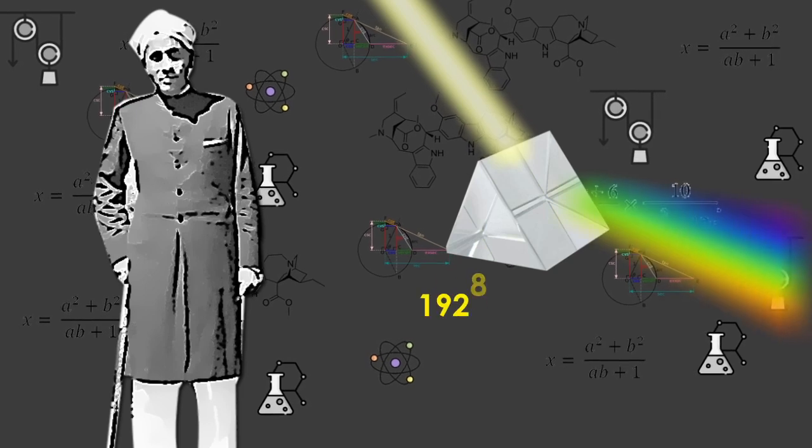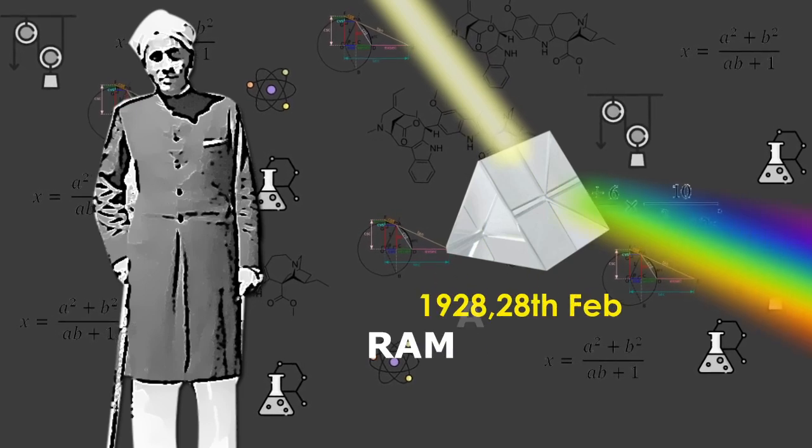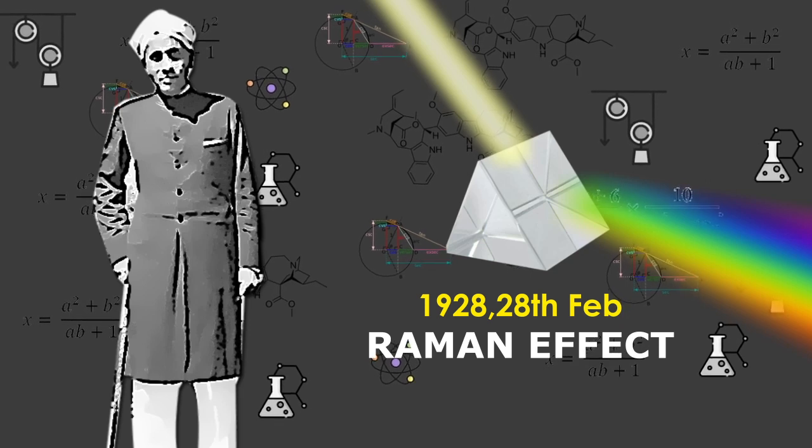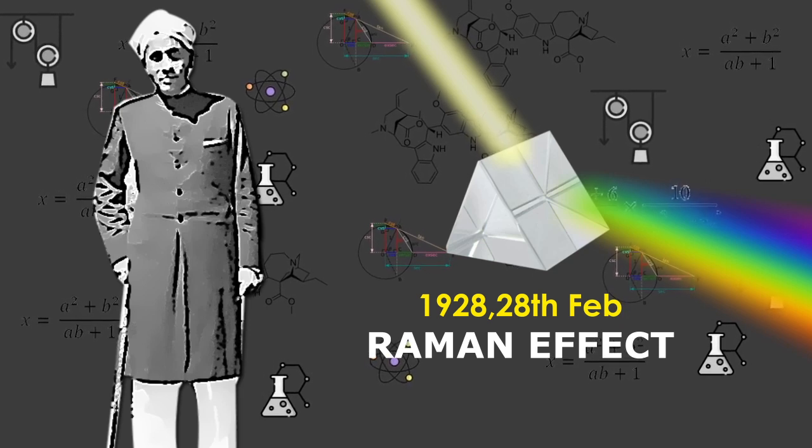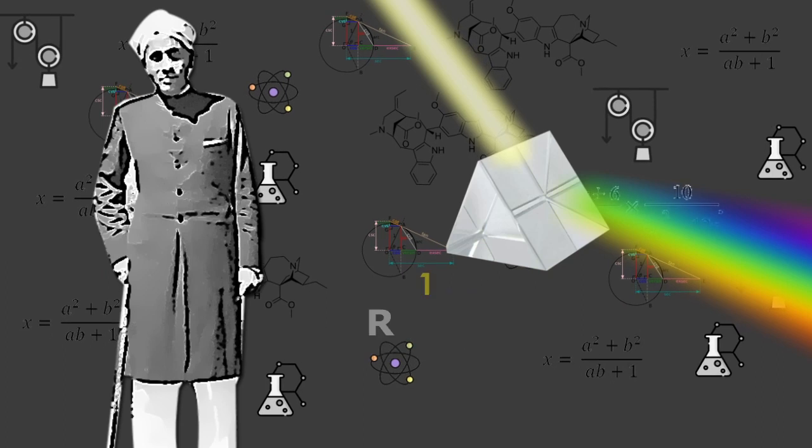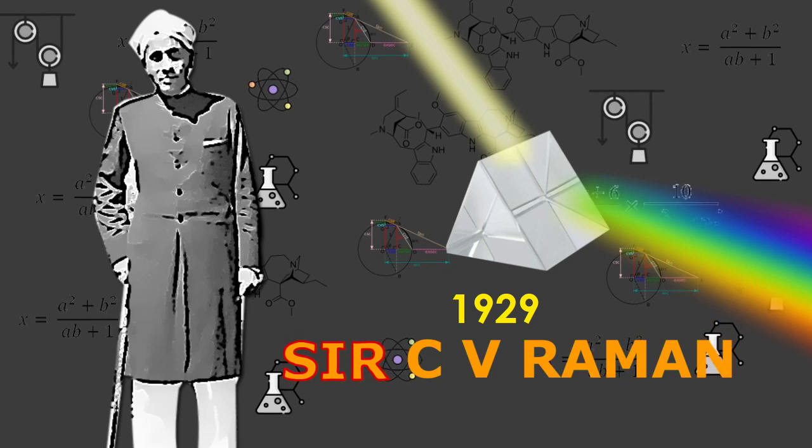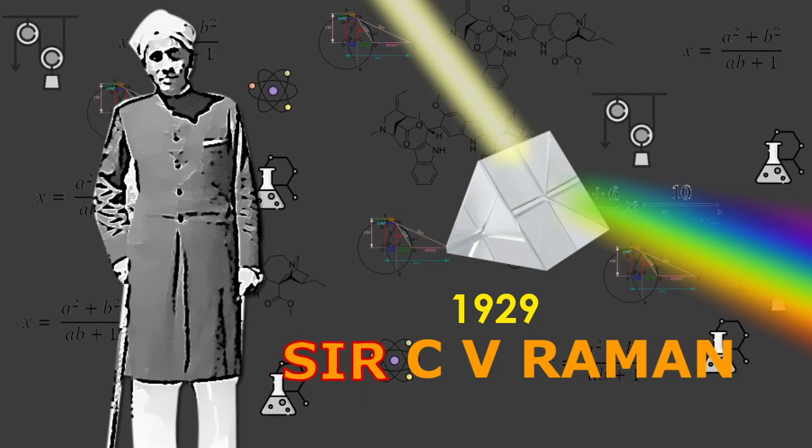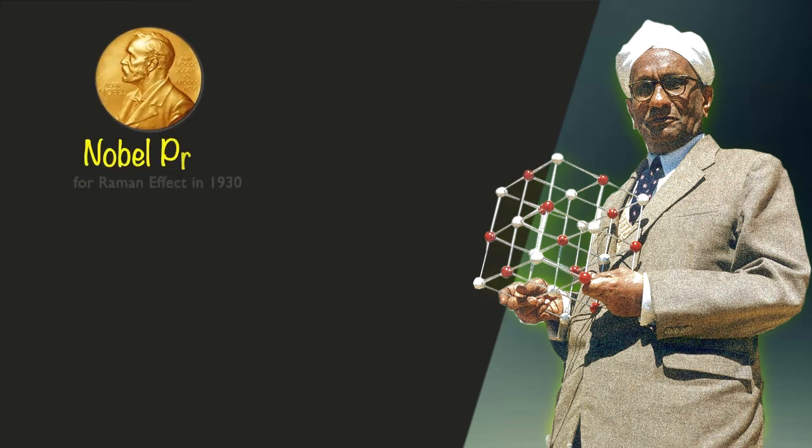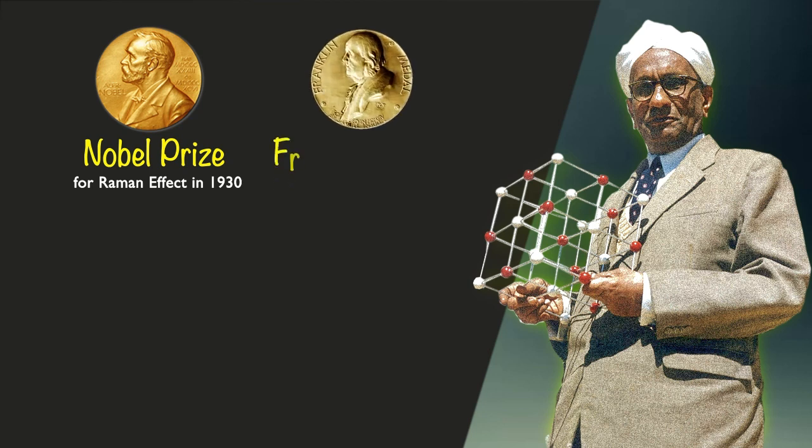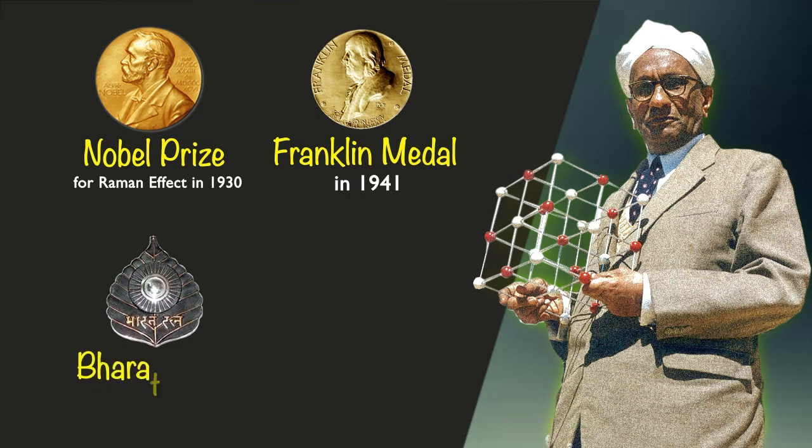On 28 February 1928, he discovered a radiation effect of light which is presently known as the Raman effect. In 1929, C.V. Raman was decorated with the title of Sir by the British government. Sir C.V. Raman was decorated with the Nobel Prize in Physics for the Raman effect in 1930, Franklin Medal in 1941, Bharat Ratna in 1954, and Lenin Peace Prize in 1957.